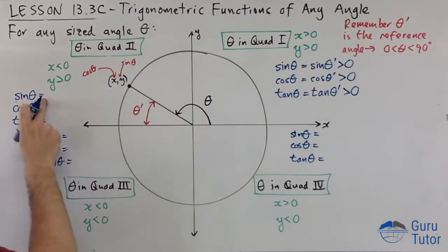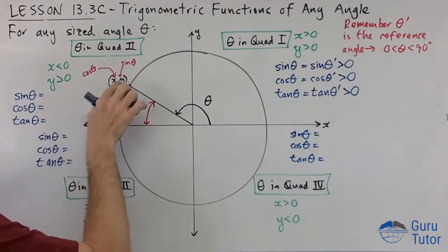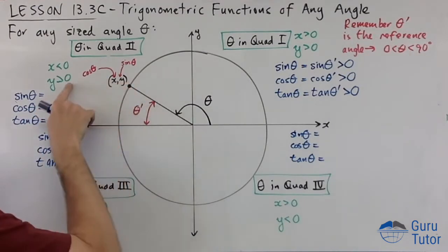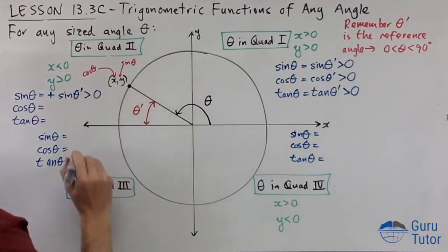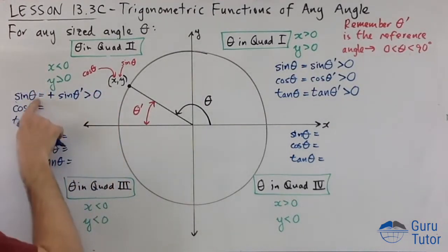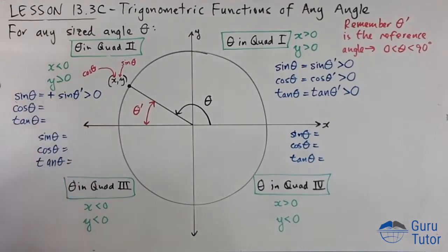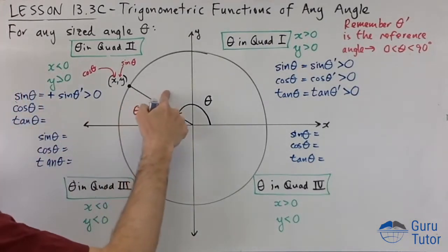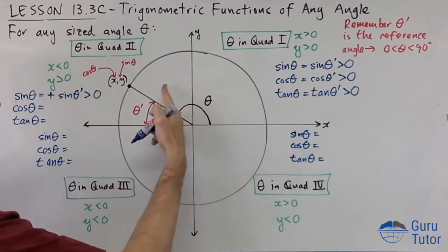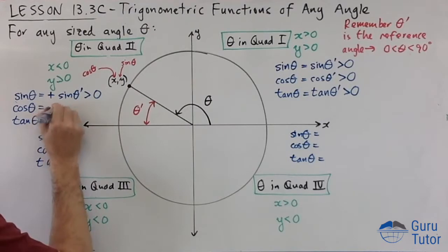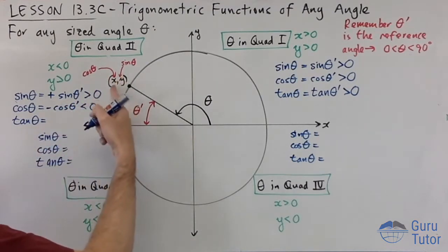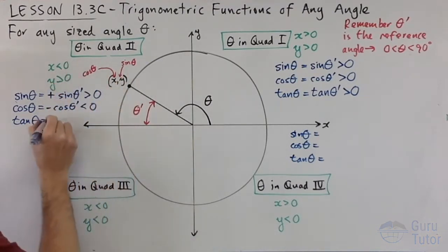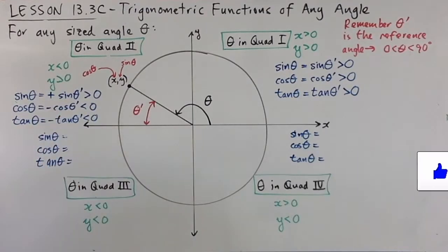In the second quadrant, sine is always the y coordinate, and the y coordinate is positive — so it's plus sine of the reference angle. Cosine is always the x coordinate, but in the second quadrant x is negative, so cosine gives a negative value. Tan is y over x — one positive, one negative — so tan is also negative. Only sine is positive in the second quadrant.